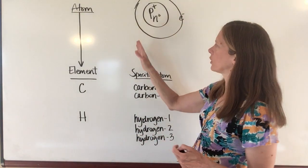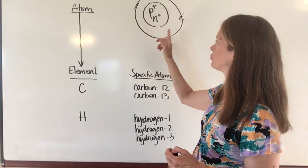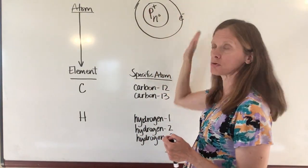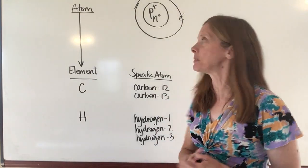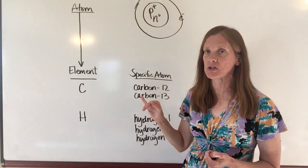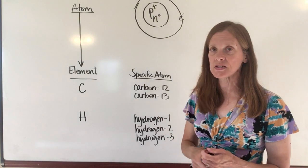In order for atoms to be neutral, you have to have the same number of protons as you do electrons, because protons are positively charged and electrons are negatively charged.